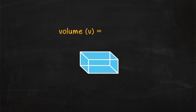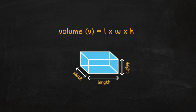To find the volume of something shaped like a box, multiply the length times width times height.